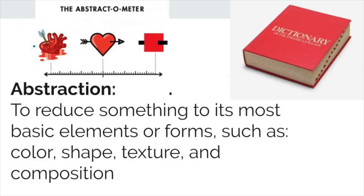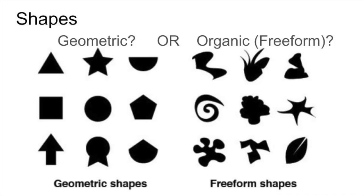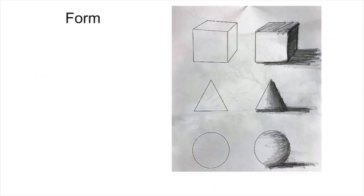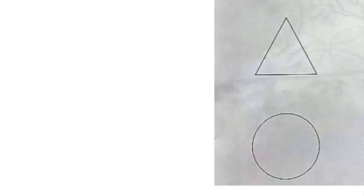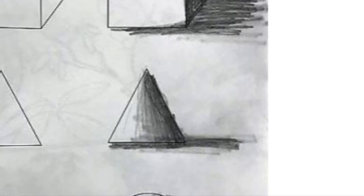We will now discuss shapes. Shapes are the most basic reduction of something. You can have geometric shapes and organic shapes. And additionally, when drawing shapes, they can be very 2D and flat, as seen in this image, or 3D by adding shading.